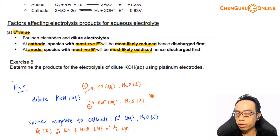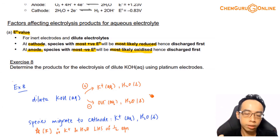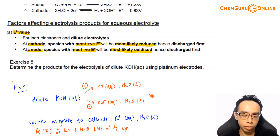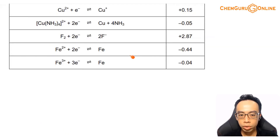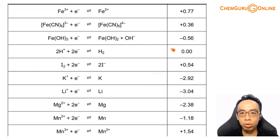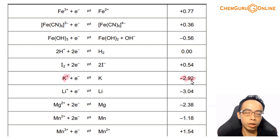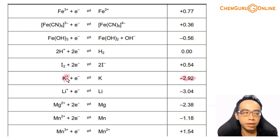If I consider reduction, I want K+ on the left-hand side of the half equation. I also want water on the left-hand side. Looking at the data booklet, focusing on the left-hand side for reduction, there is only one half equation involving K+: K+ plus electron gives K, at −2.92 volts. Copy this whole thing down — this potential will only appear once involving K+ on the left-hand side.